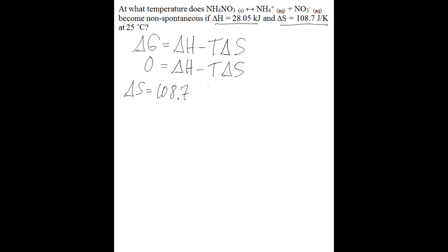So 108.7 joules per kelvin multiplied by the conversion one kilojoule per 1,000 joules is going to give you 0.1087 kilojoules per kelvin. So now that you have both your delta H in kilojoules and your delta S in kilojoules, you can substitute things into the equation.